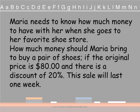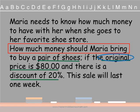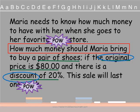Now remember our BUCK system. First we are going to box the question, and the question is in the middle of the problem — it says how much money should Maria bring? What information do I need to know about that? She is buying one pair of shoes, so that is important. The original cost is $80 — I need to know that. And there is a discount of 20%. Now what vocabulary do I need to understand? I need to know what original means and what discount means. The information I don't need — that I can knock out so I don't get mixed up — is that it is her favorite shoe store; that doesn't matter. And that the sale will last a week — they haven't asked us how long, just how much money she should bring to the store.